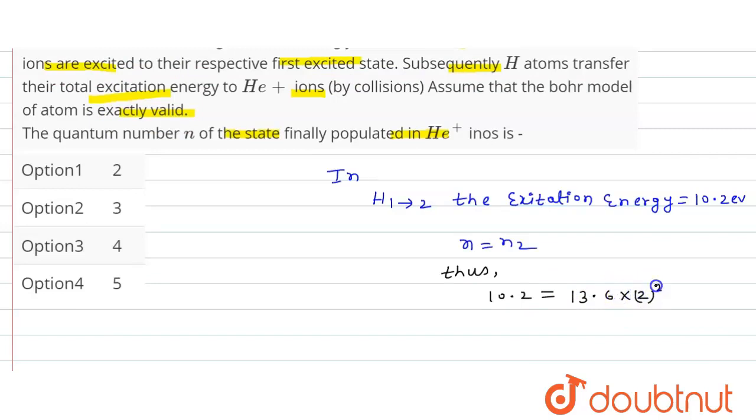That is equal to 2 squared for helium, into 1 upon n1 squared that is 2 squared, minus 1 upon n2 squared.